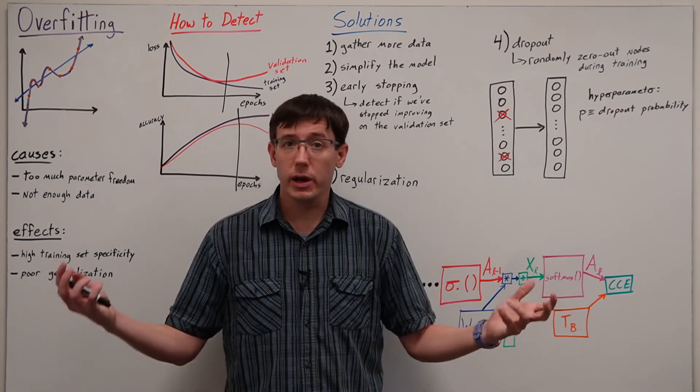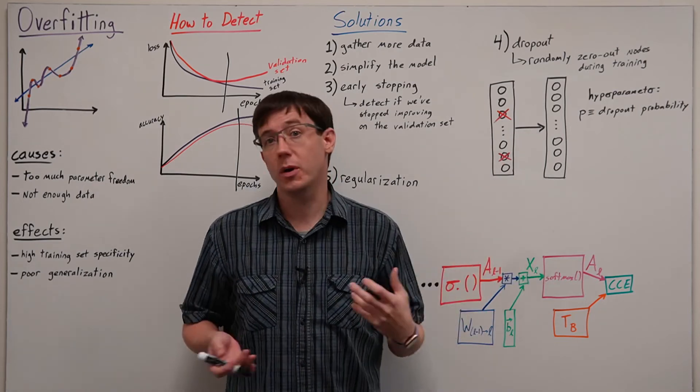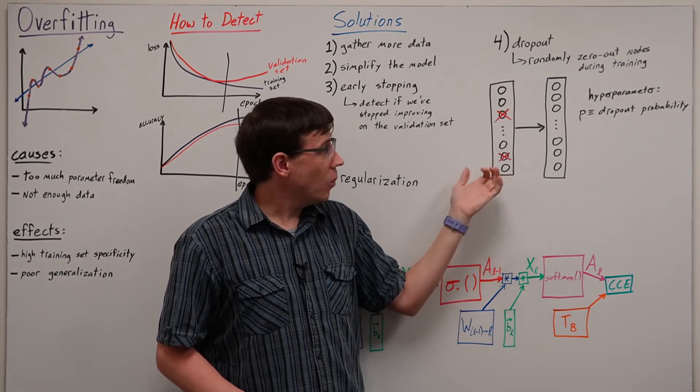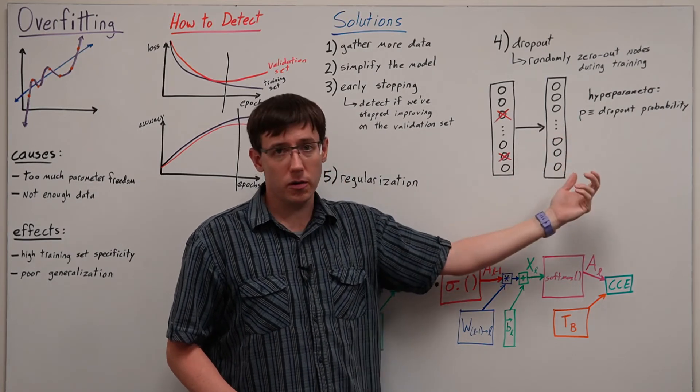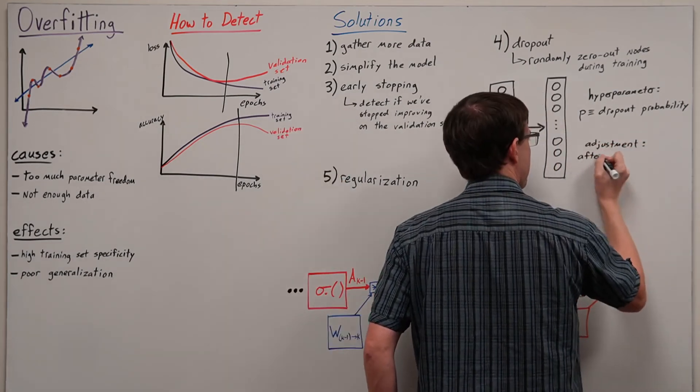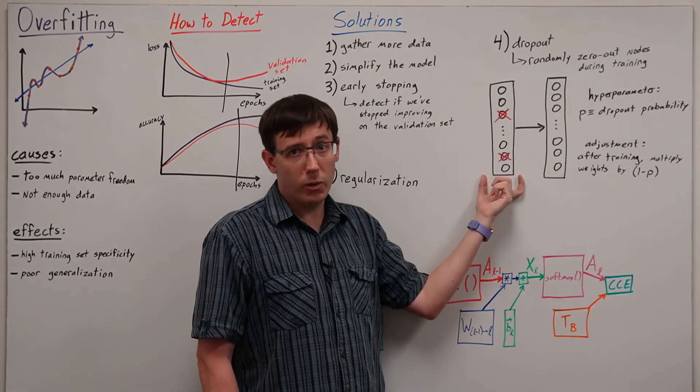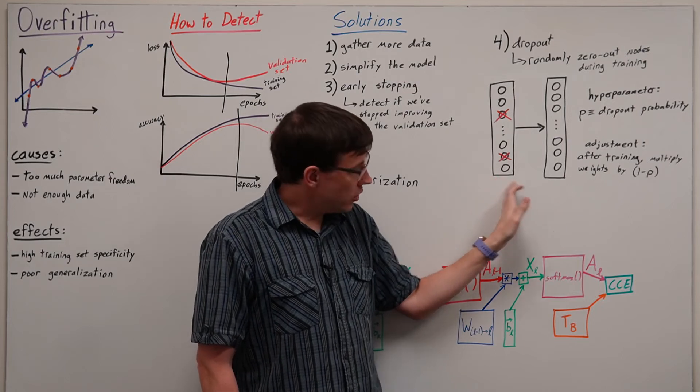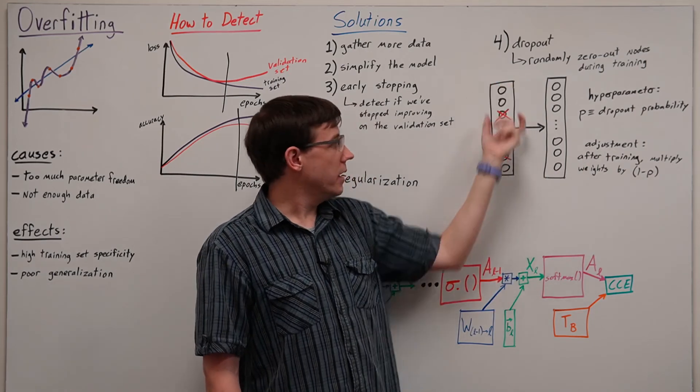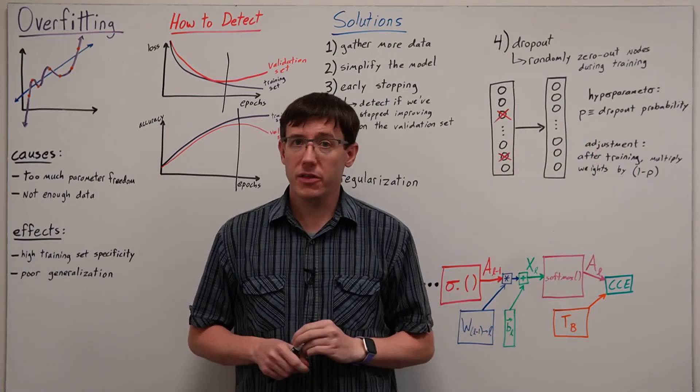In general, when we're making predictions after training is complete, we want to use all of the neurons available to make the best possible predictions. And so if we're not doing dropout when we're testing, then the weighted sums of inputs will generally be larger. And so we need to make an adjustment to account for this. And so for any layer where we were doing dropout, we should adjust the weights down by a 1-p factor to compensate for the fact that there will now be more neurons contributing to the weighted sum of inputs at the next layer.